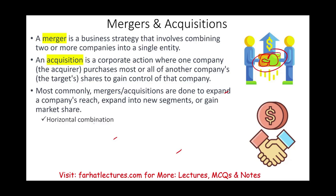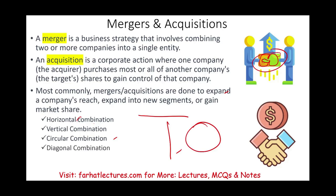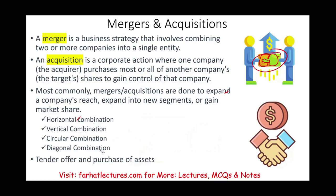We're going to look at different reasons by examining different types of mergers and acquisitions, which include horizontal combination, vertical combination, circular, and diagonal combination. We will also talk about tender offer and purchase of assets as forms of acquisition. We'll go through each concept separately, with real-world examples and advantages and disadvantages.